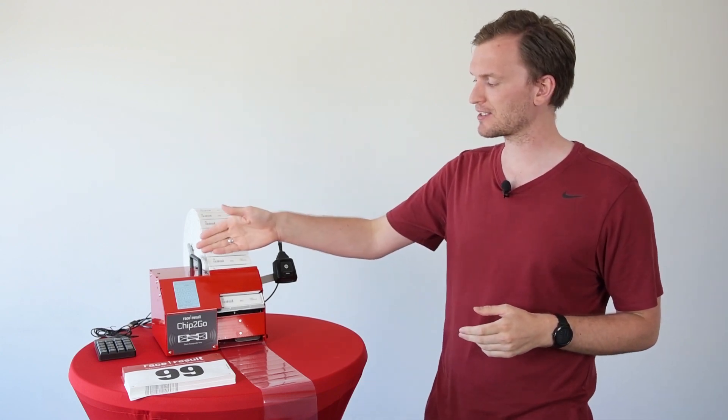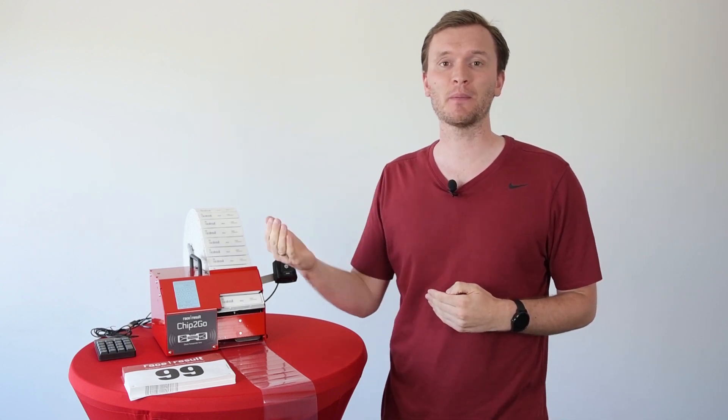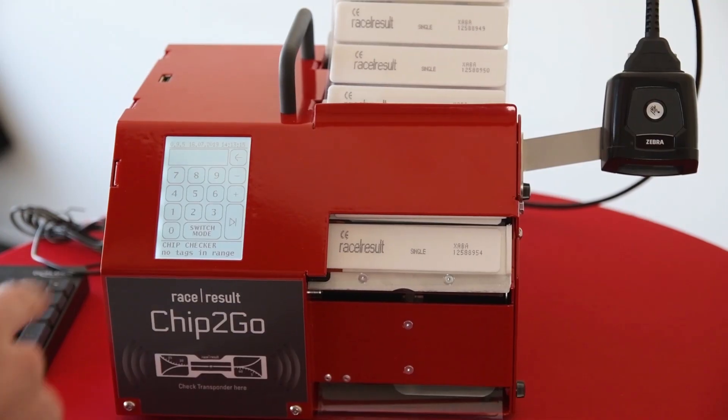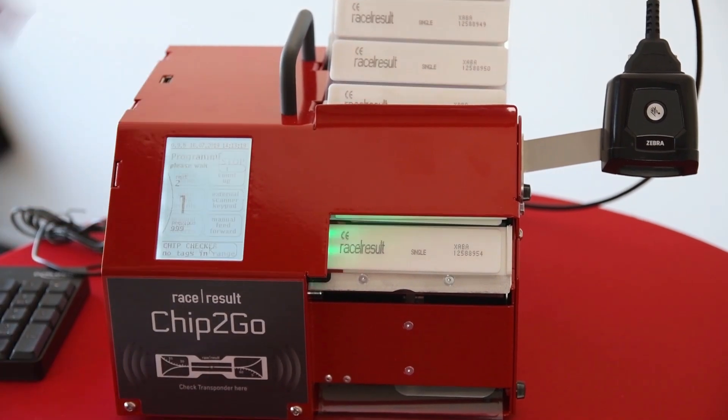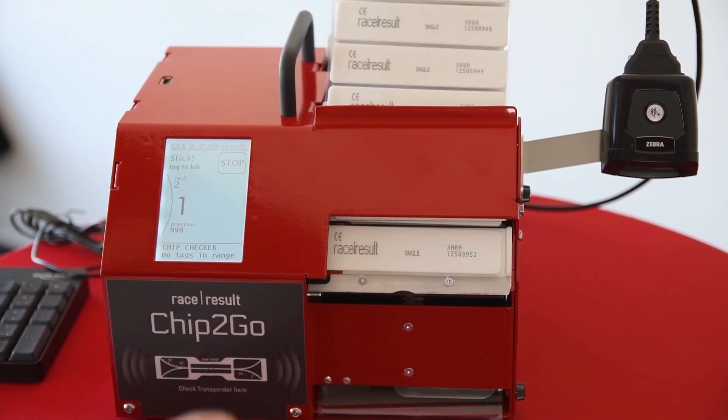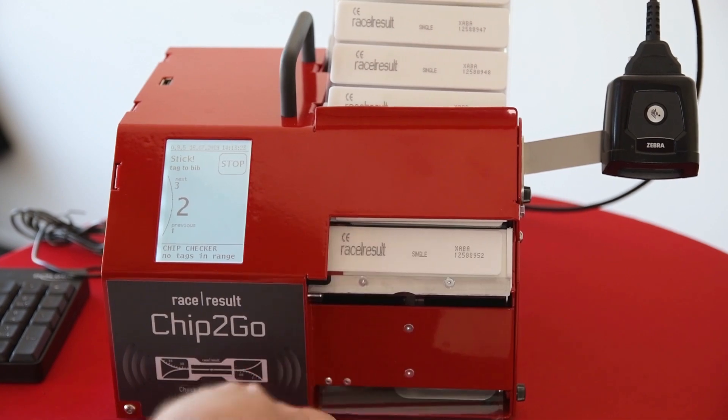With a Chip2Go machine, I simply need to grab my system, any roll of raw transponders, and any stack of bibs, and I'm ready to start sticking chips. I can use the handy count up or count down feature to quickly produce a series of numbers without having to stop. If I start at chip number one and then tell the machine to count up, it will continuously feed out sequential chip numbers until I tell the machine to stop.